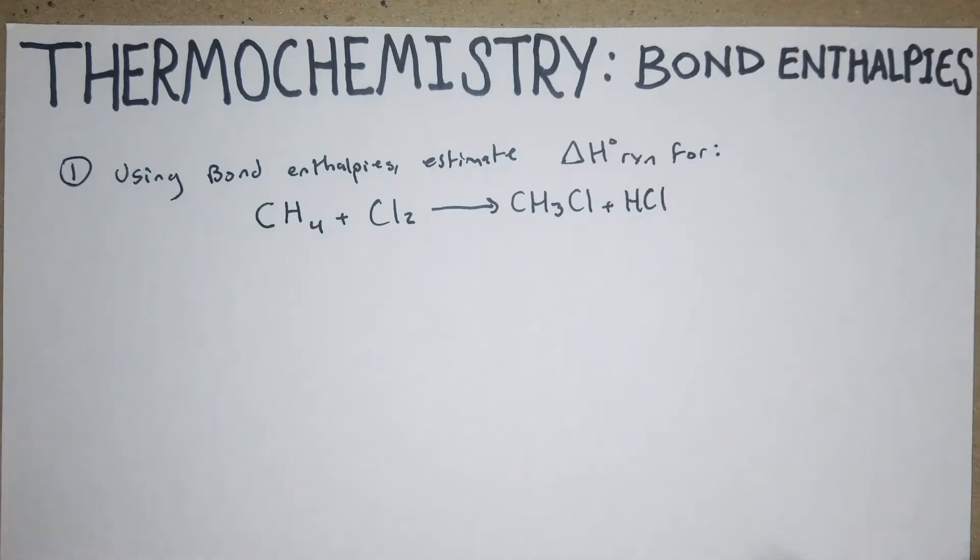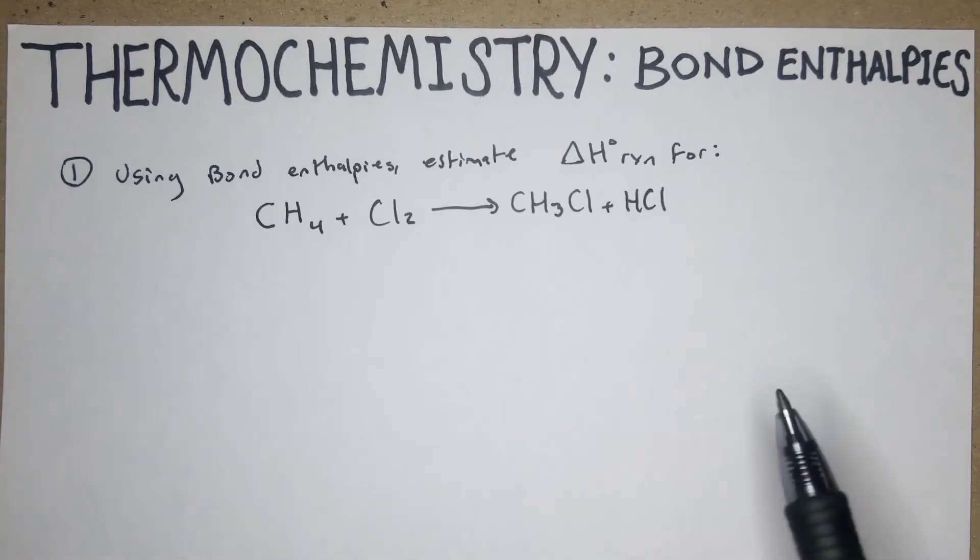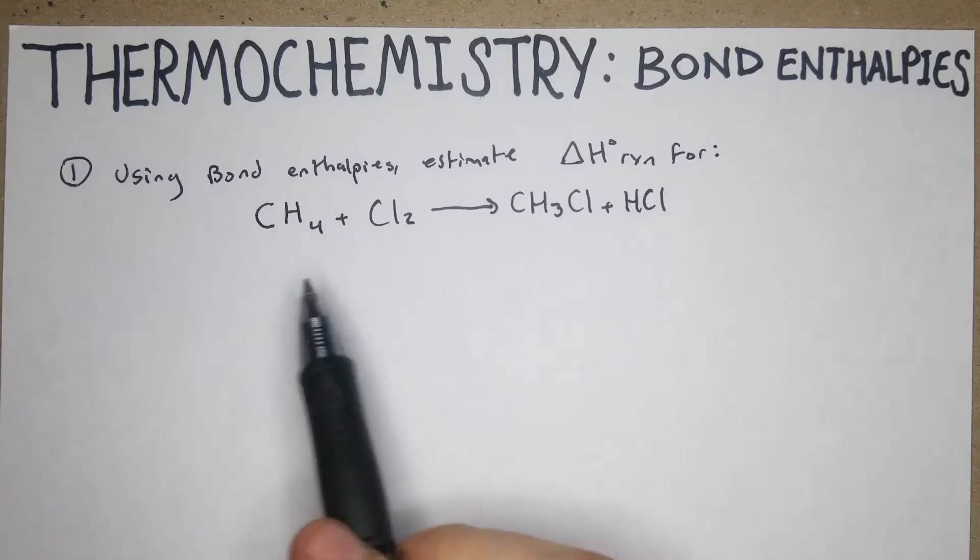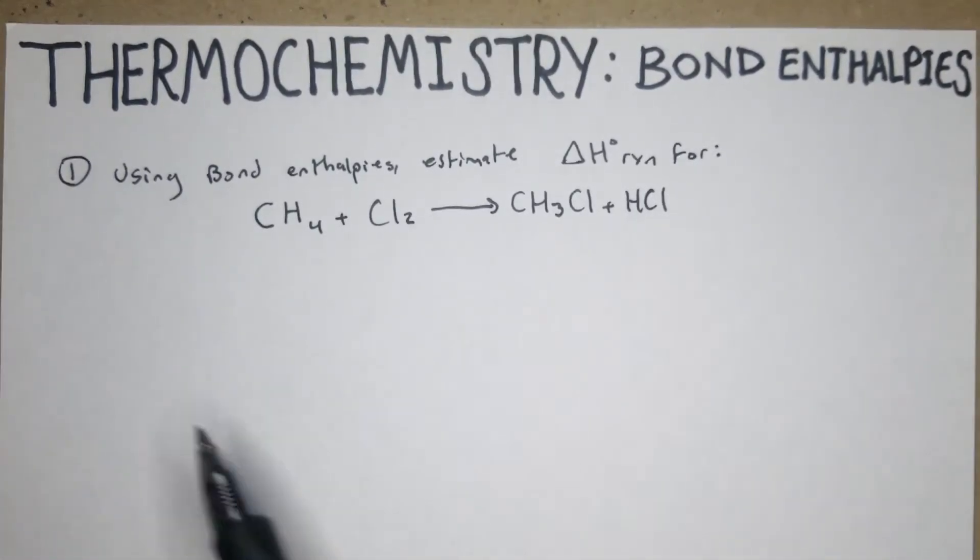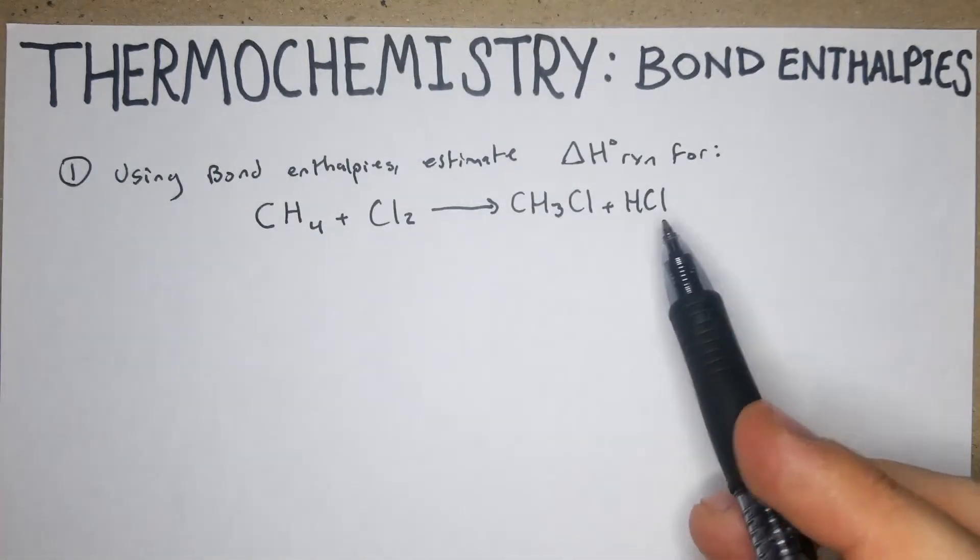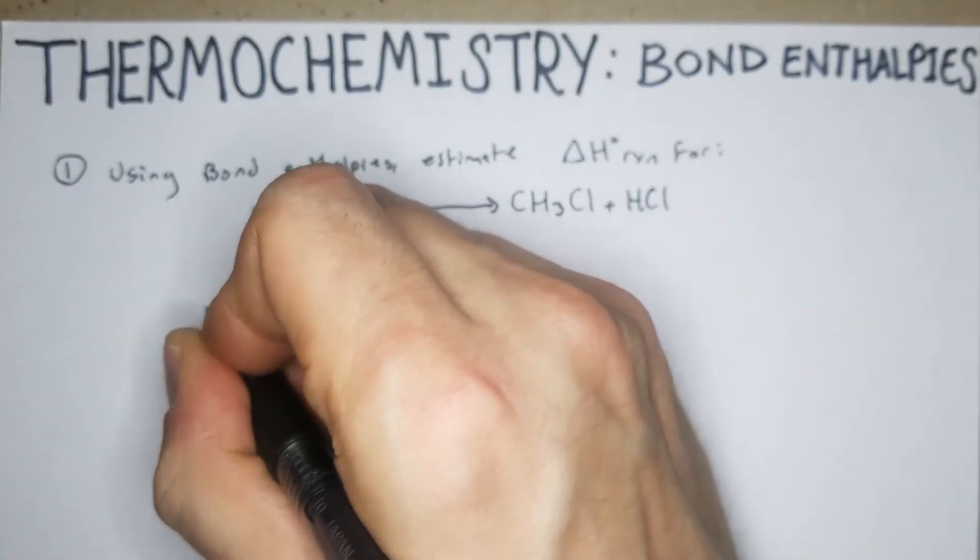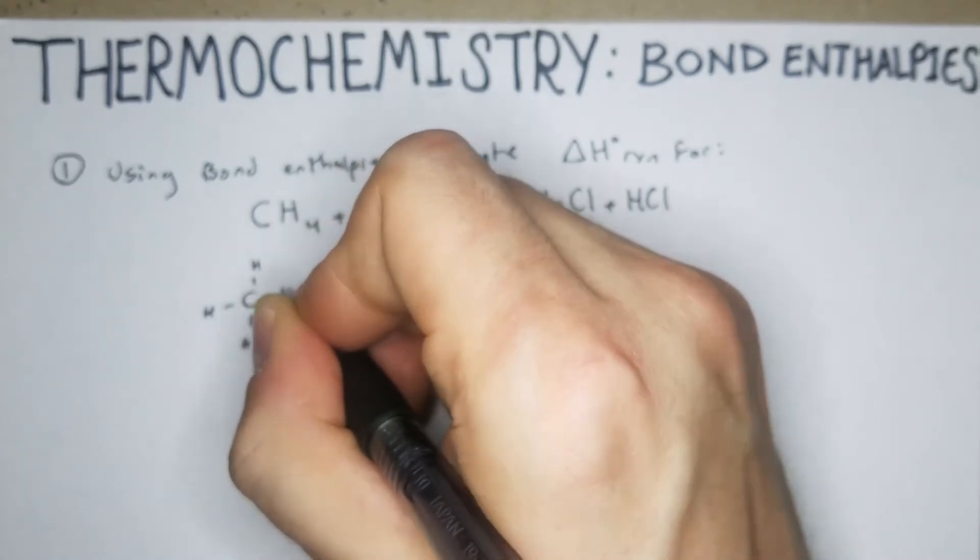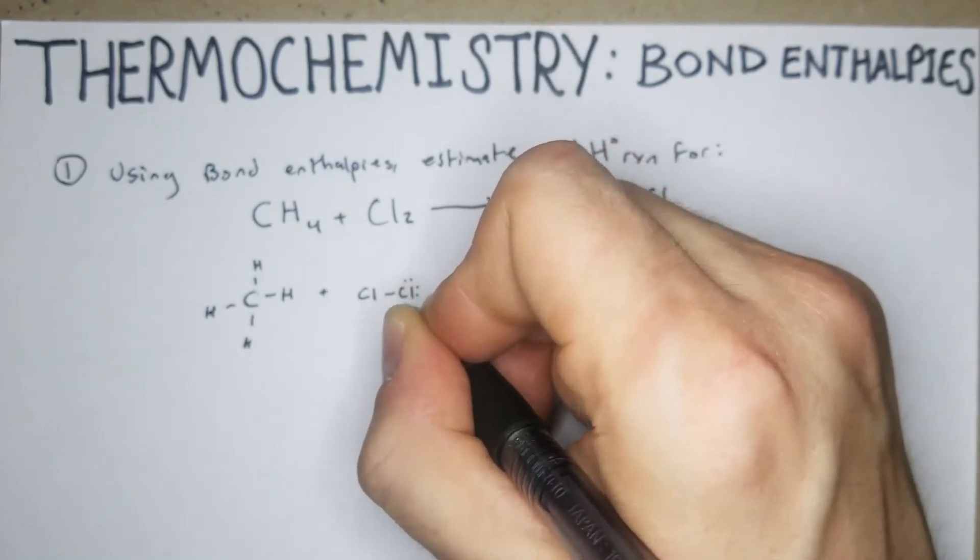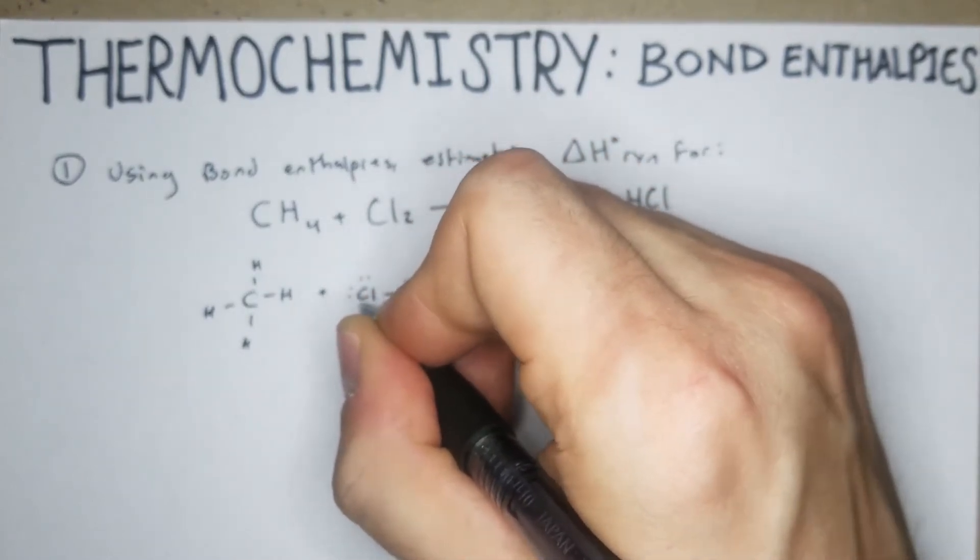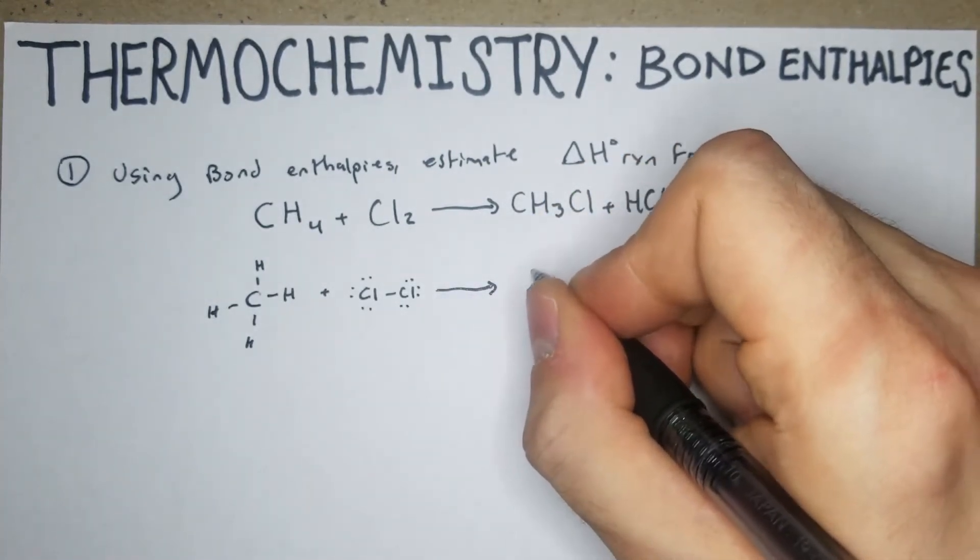So basically what we're doing is we're talking about the bonds that are broken compared to the bonds that are formed, and each bond has a unique enthalpy. We're going to use that to figure out what the enthalpy for the reaction is. This is something that I like to do. Once you're getting started it can be a good idea, especially when you're just learning it, because it provides a good framework of how to think about it.